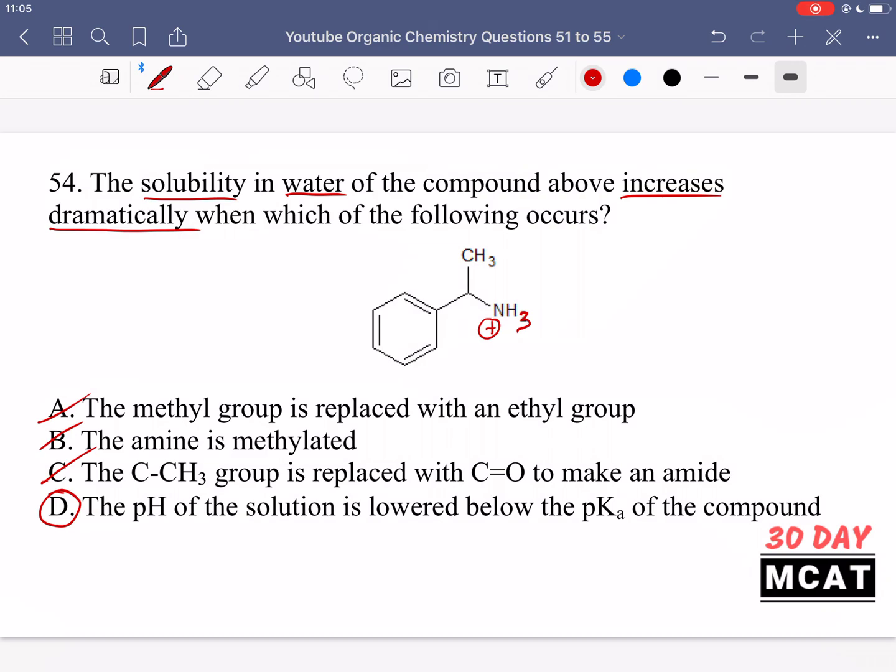Option C, between amine and amide, there's a slight increase in solubility, but not nearly as much as option D. Just remember, charged species go very well in hand with a polar protic solvent like water.